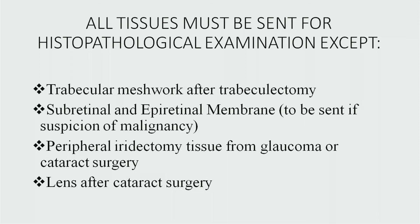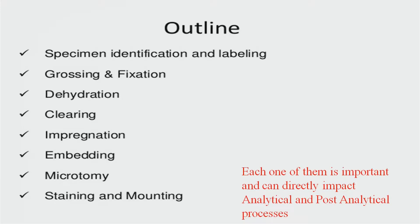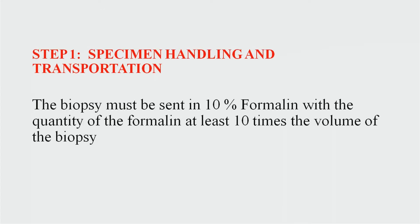Any tissue must undergo a histopathological examination. The process of histopathology starts with specimen identification and labeling, grossing, fixation, dehydration, clearing, impregnation, embedding, microtomy, staining, and mounting.